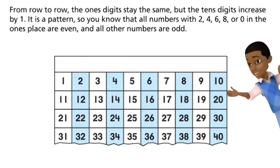Even numbers have 0, 2, 4, 6, or 8 in the 1's place.